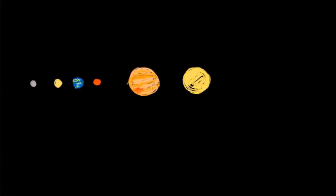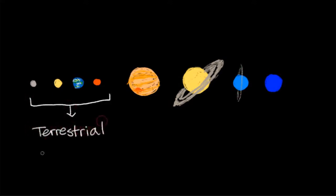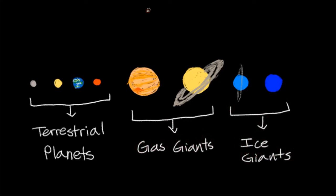There are currently eight planets in the solar system. The rocky terrestrial inner planets and the gas giants and ice giants that make up the outer planets. Have you ever wondered how the planets were created and why they look so different?